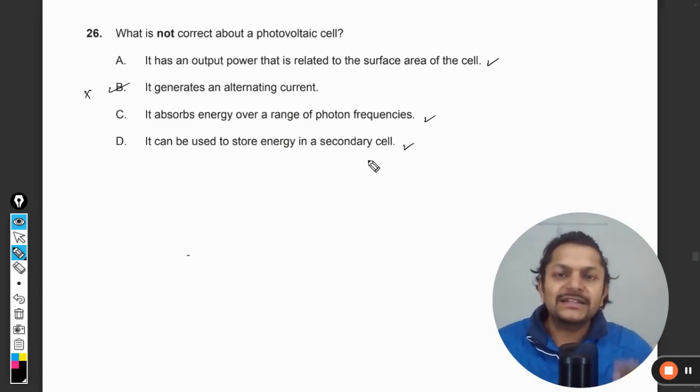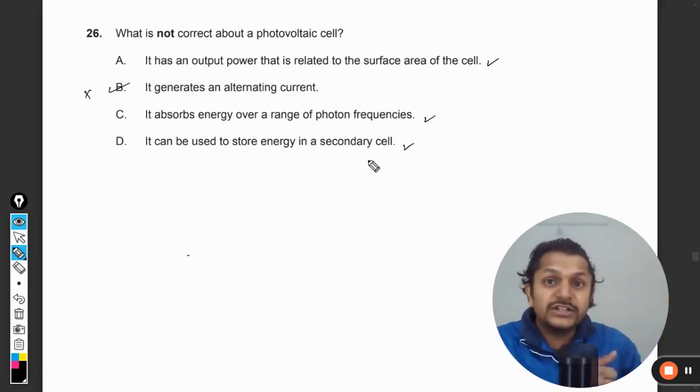We all know that a secondary cell can be recharged only with DC current, not with AC current. So this is one of the primary uses of a solar cell - we use solar cells to store energy in our batteries.